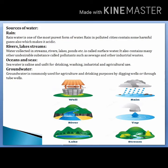Sources of water are rain, rivers, lakes, streams, oceans and seas, and ground water. Rain is the purest form of water and has no impurities. But as the environment is polluted, rain gets mixed with harmful gases which makes it acidic. So it can be used for drinking purposes only after appropriate treatment.